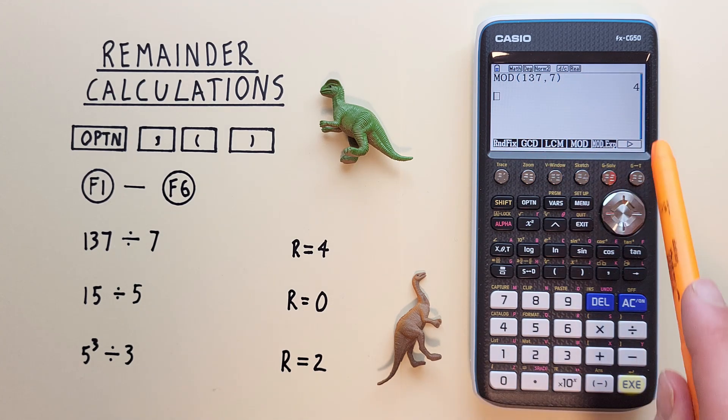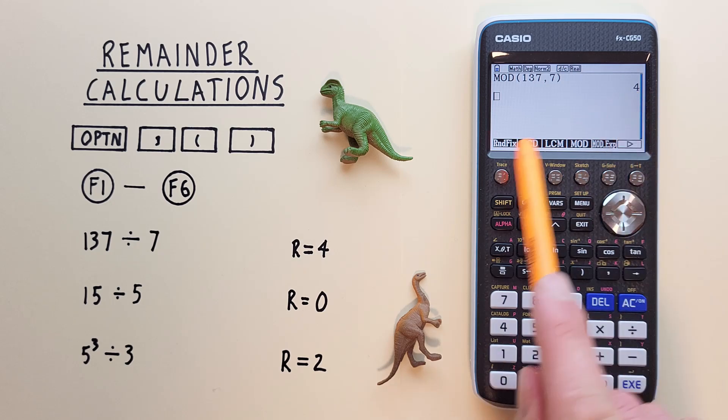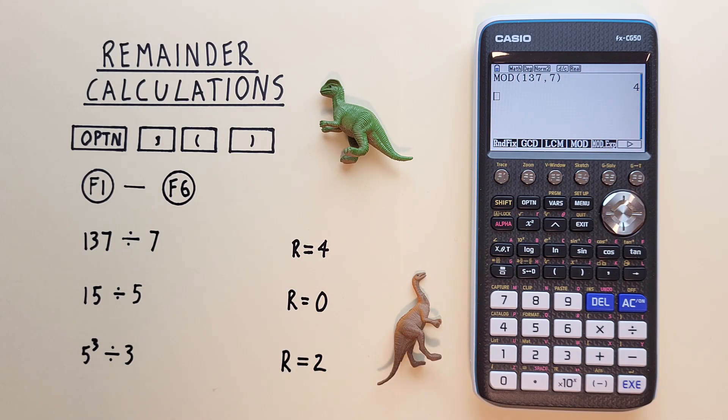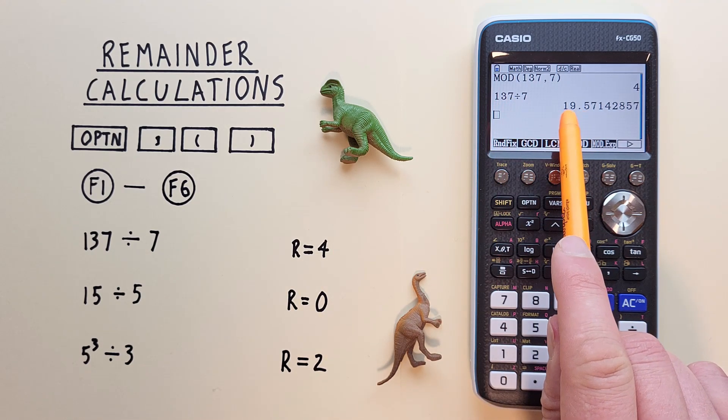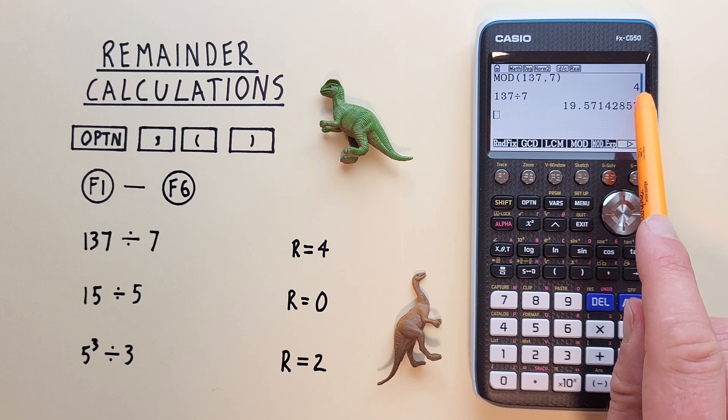And we see we get a remainder of 4, which is correct. Now this doesn't give us the number of times 7 goes into 137, just the remainder. So if we want that, all we have to do is go 137 divided by 7. And we get 7 goes into 137 19 times with a remainder of 4.